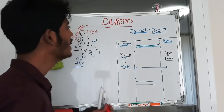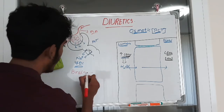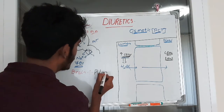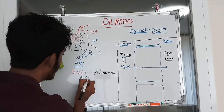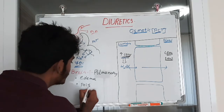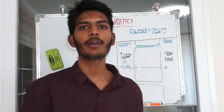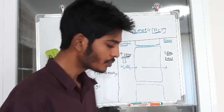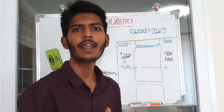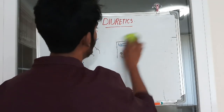Osmotic diuretics are given intravenously. Indications include acute conditions such as brain and pulmonary edema. They are also used during poisonings — inducing diuresis flushes out the toxic compound from the blood. The major side effect of osmotic diuretics is volume depletion, so we must monitor the patient's blood pressure.